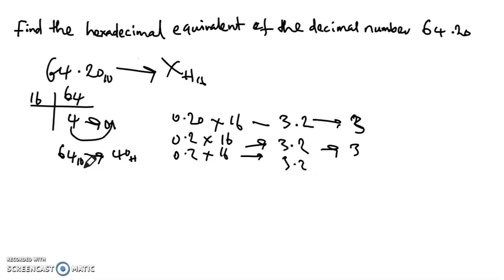And you are left with 3. It means that if you continue you will still get the same result. So let's stop here and this means that our 0.20 to base 10 is nothing but 3 3 3 repeating hexadecimal.